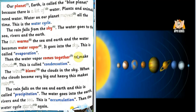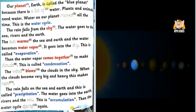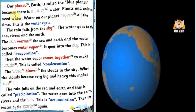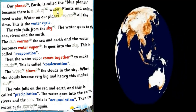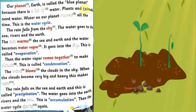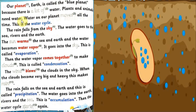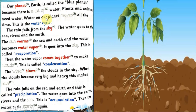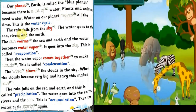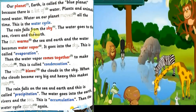Our planet Earth is called the blue planet because there is a lot of water. Plants and animals need water. Water on our planet moves all the time. This is the water cycle. The rain falls from the sky.